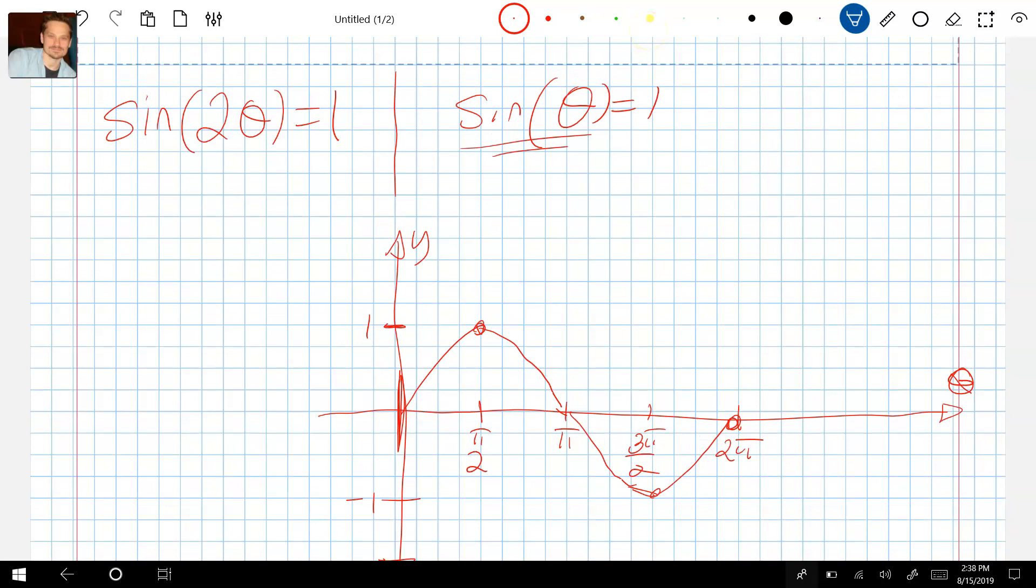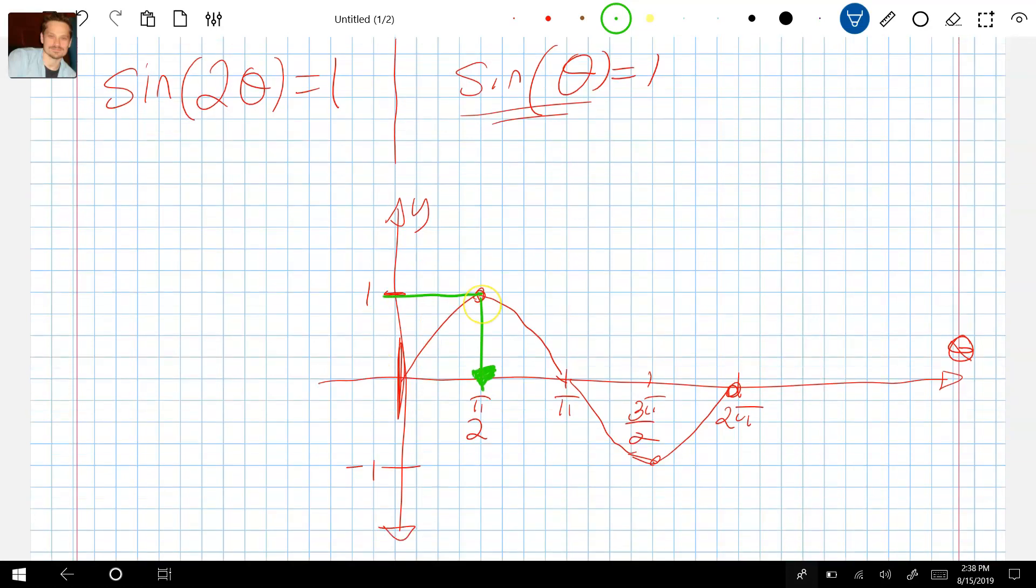And when we say sine of theta equals 1, graphically, what it means is this right here. That solves the equation. We're saying find the angle where the value of the sine function is equal to 1. So that is right here at pi over 2 for this basic sine function, pi over 2. So I could write down the solution as pi over 2. Theta equals pi over 2 for that reason.